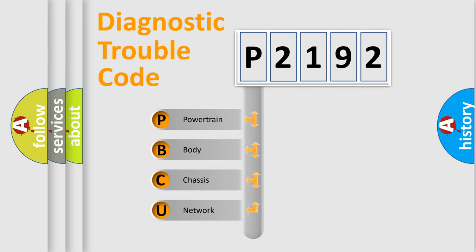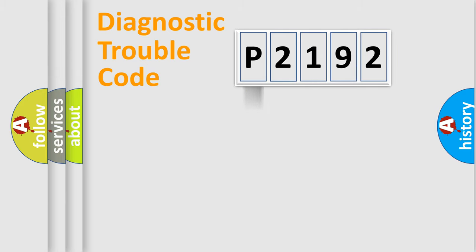We divide the electric system of automobile into four basic units: Powertrain, body, chassis, and network. This distribution is defined in the first character code.